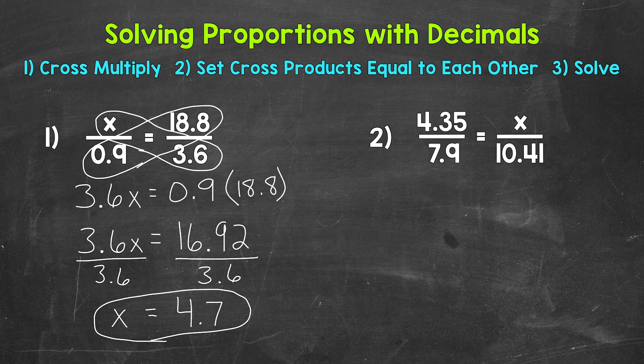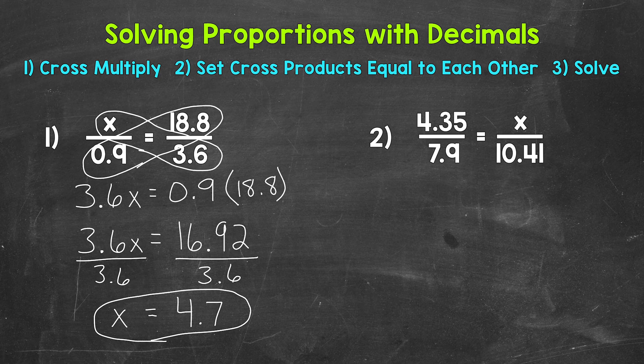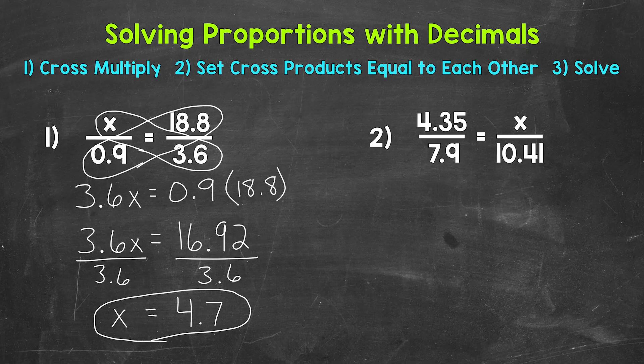Now something I do want to mention about using cross multiplication to solve proportions. Don't get too held up on what numbers to multiply first, or which diagonal you should put on which side of the equal sign. It will all work out the same either way. Just make sure to multiply diagonally and have the equal sign in between your cross products.